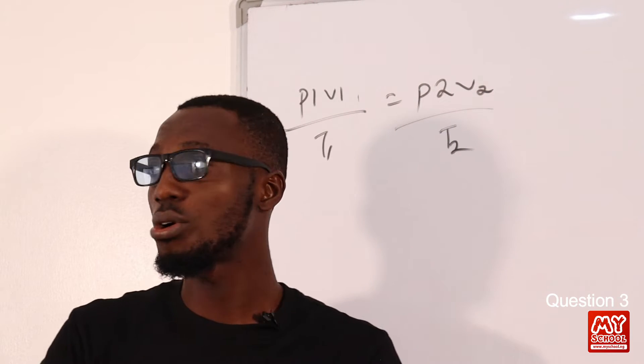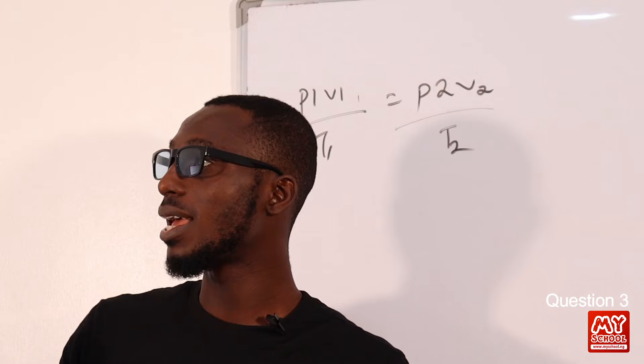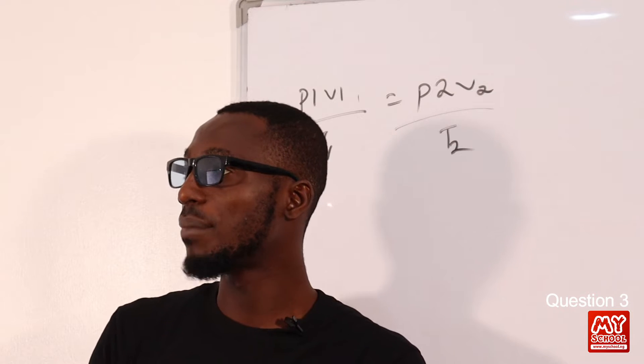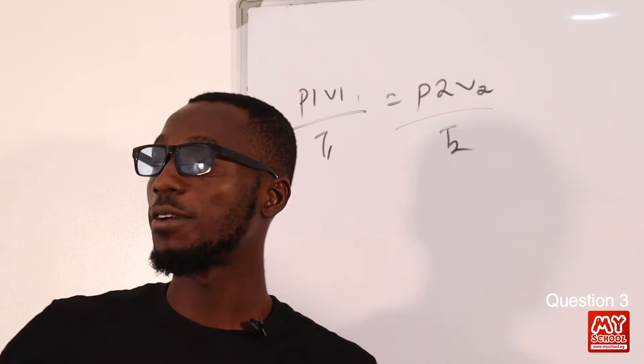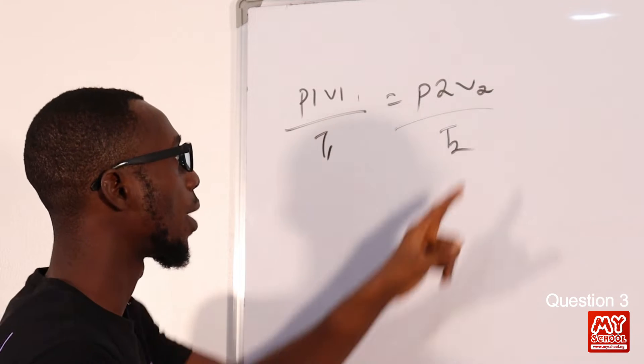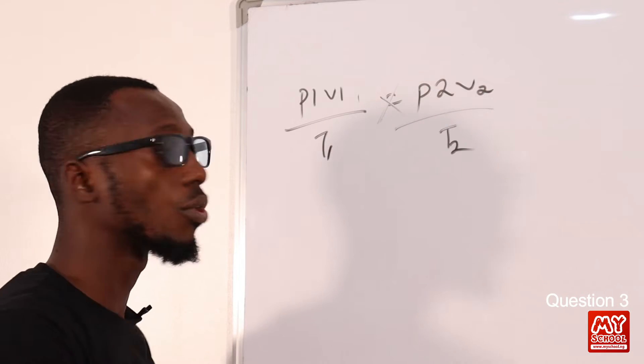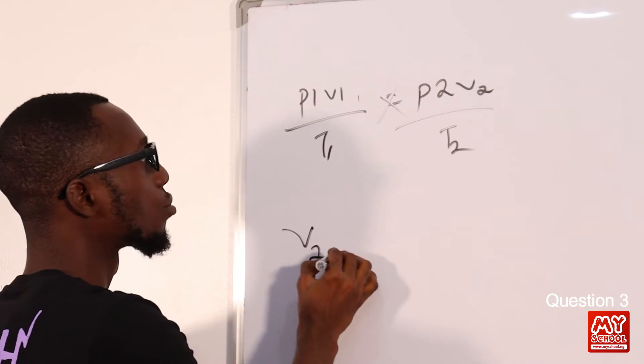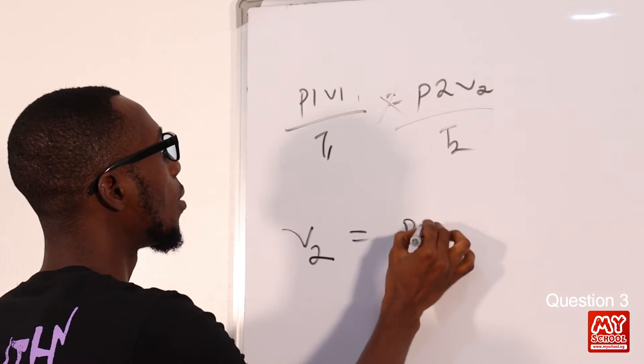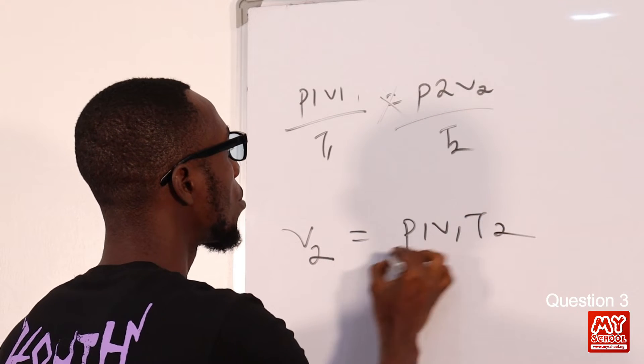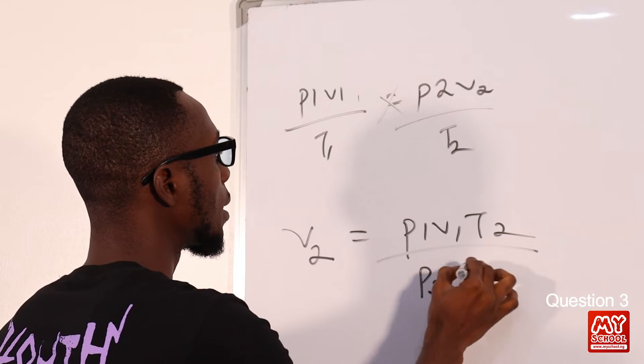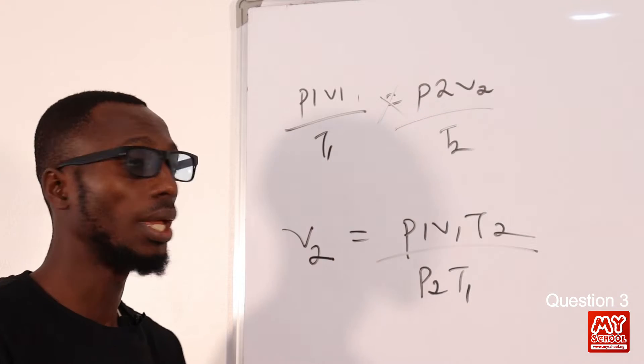From the question we are told to calculate the volume of the gas at STP, so we are looking at V₂. If we are making V₂ the subject of the formula, what we should have is V₂ = P₁V₁T₂/(P₂T₁).